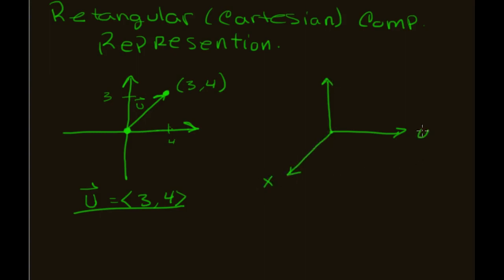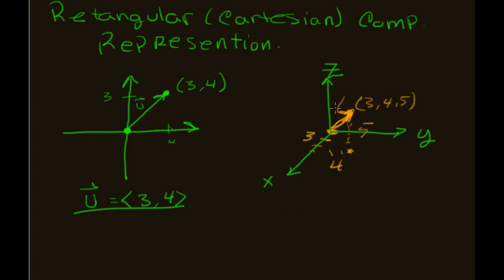You can do a similar thing in three dimensions with x, y, and z. Say I have a vector v starting at the origin, going out 3, over 4, and up 5. Its terminal point is at (3, 4, 5) in space. So vector v in component form would be written as the vector (3, 4, 5). This is more useful than just talking about direction and magnitude because we can now get actual numeric values.